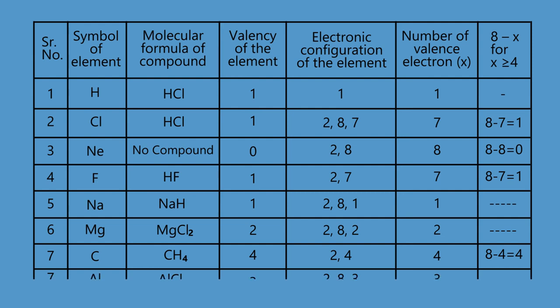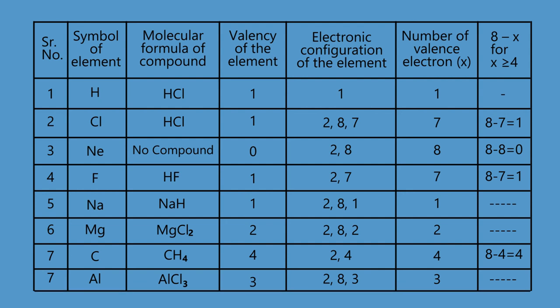Therefore, carbon's valency is 8−4 = 4. In the compound AlCl3, the element aluminium has valency 3. Its electronic configuration is 2,8,3 and it contains 3 valence electrons.